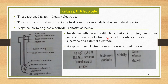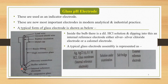Inside the bulb, there is a dilute HCl solution, and dipping into this is an internal reference electrode — either a silver-silver chloride electrode or a calomel electrode. Thus, inside the glass bulb there is a dilute HCl solution together with an internal reference electrode, forming a complete cell inside this particular glass bulb.